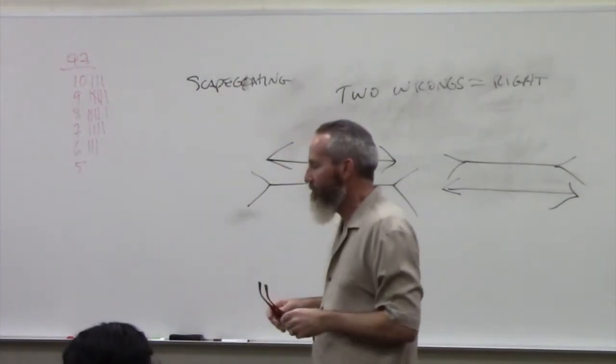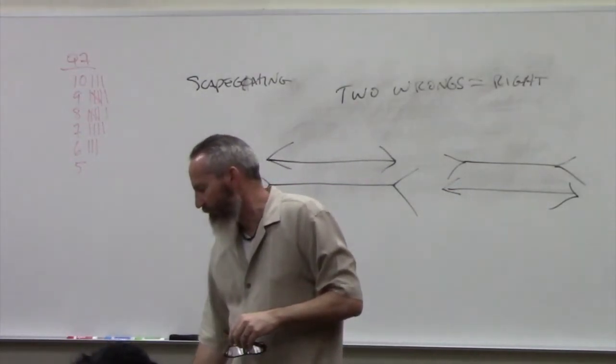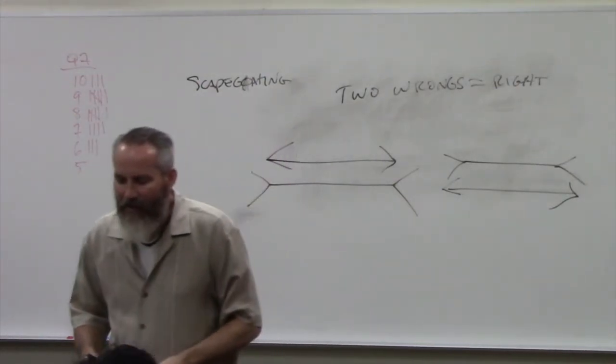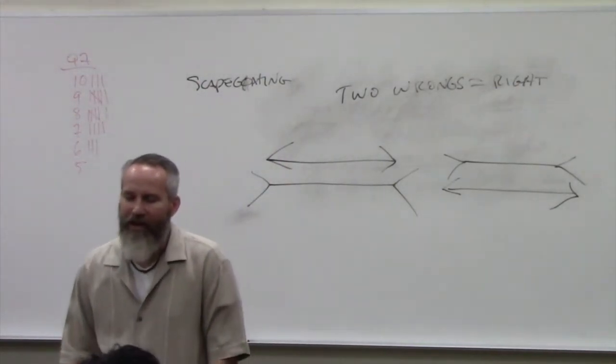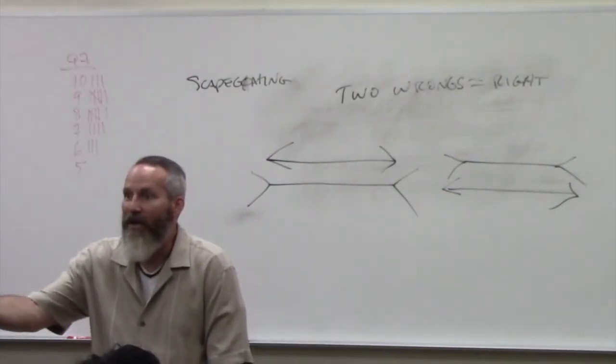Give you an example. Somebody says, it's tragic that we have 1.5 million unborn children being murdered every year. Something needs to be done about this tragedy, and they're in a debate with somebody.